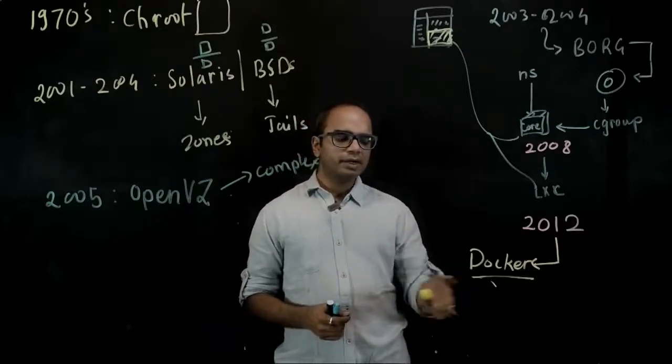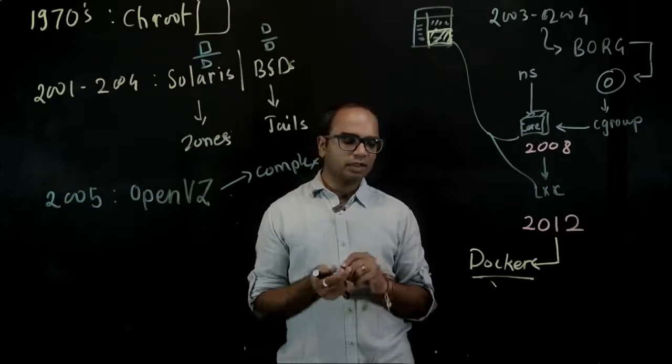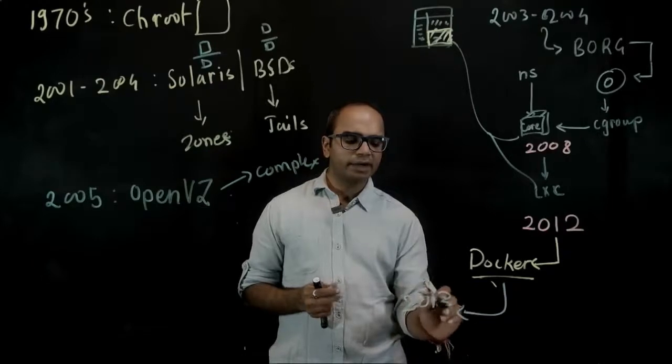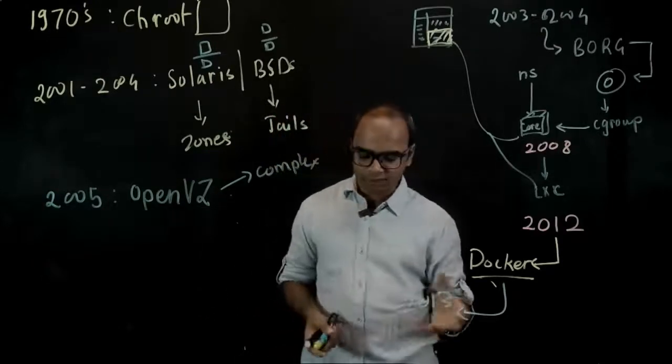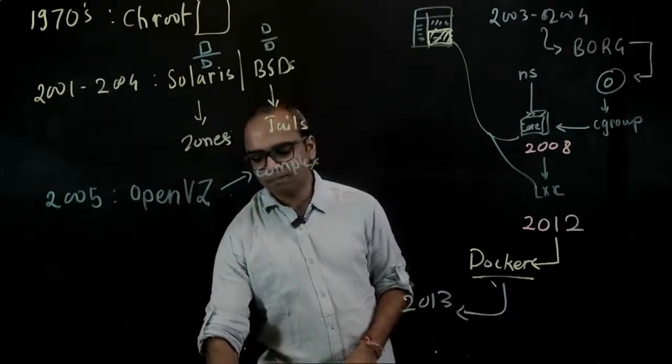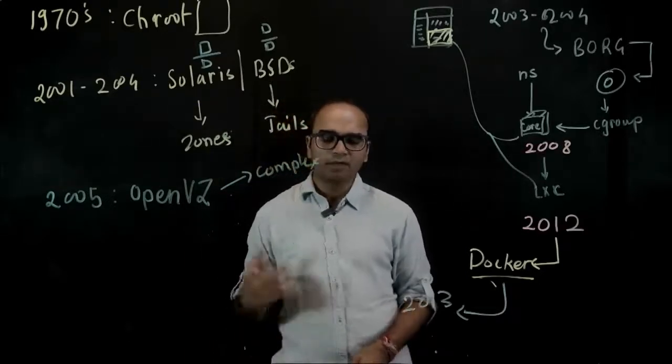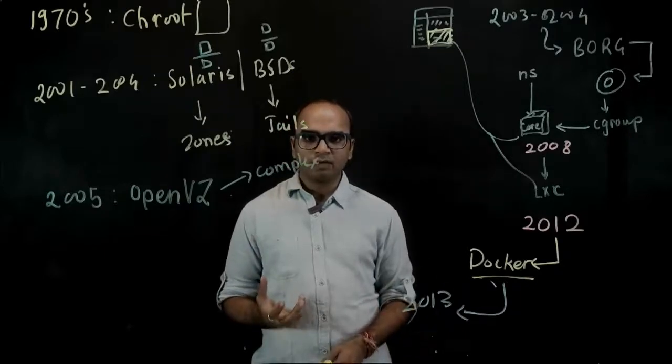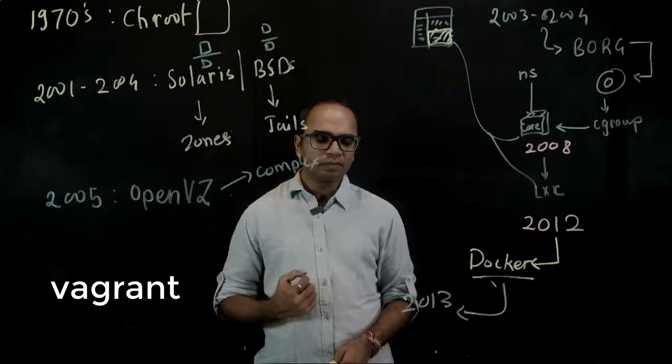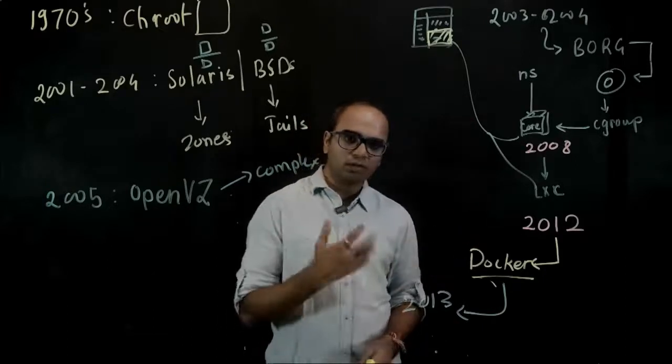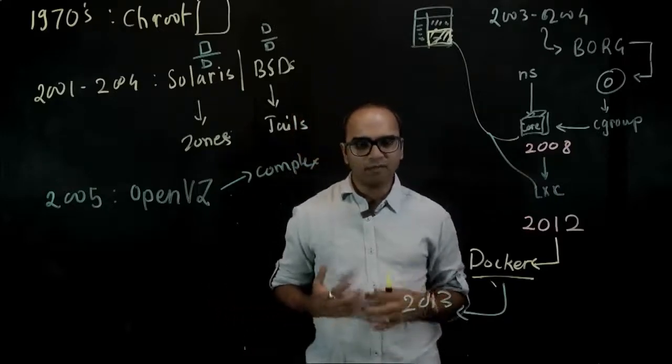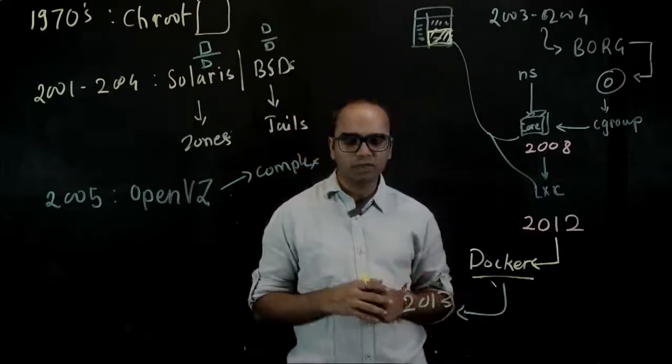Now people started talking about Docker around 2013. It got really popular and a lot of people started experimenting with Docker. That was the year when I started with Docker because I was building a big data infrastructure and automating it. We were using a lot of VMs for that. At that time we were using Vagrant, which was an automation tool, but using Docker was a much faster process. A lot of people started experimenting with Docker and found it very interesting.